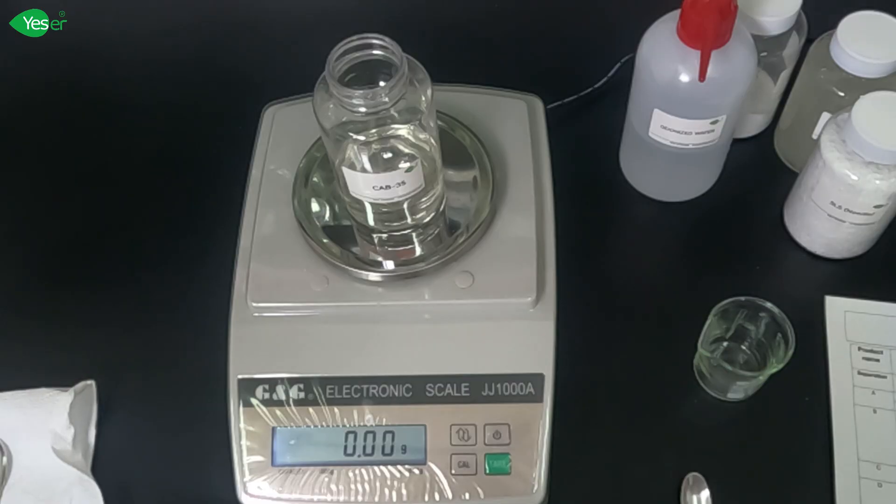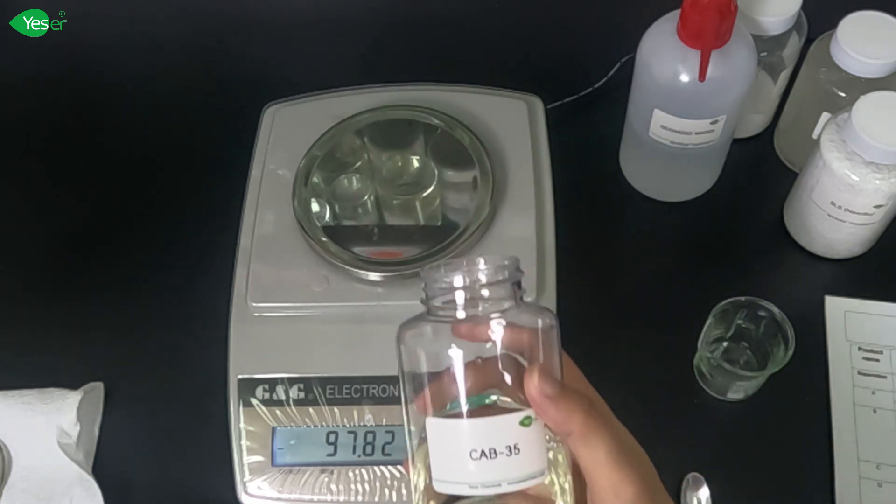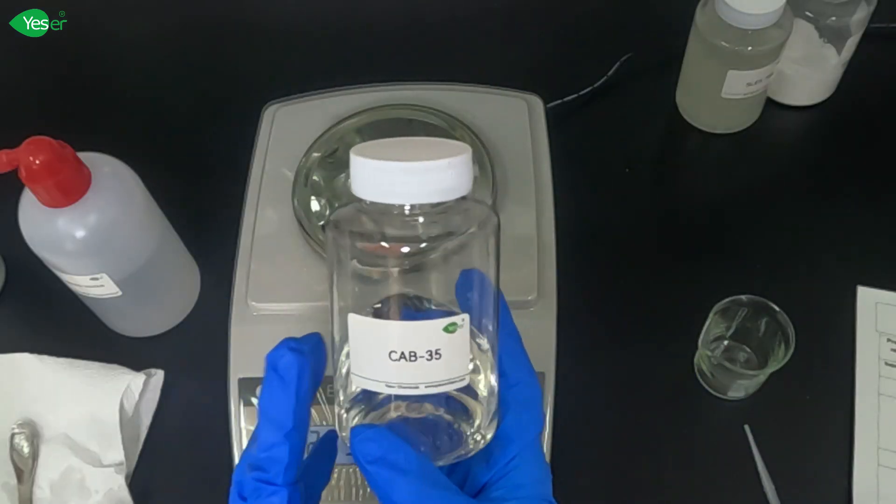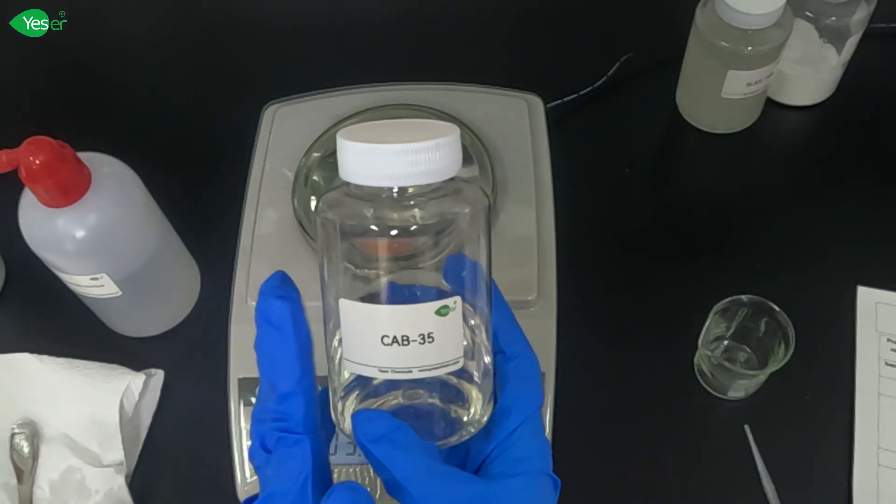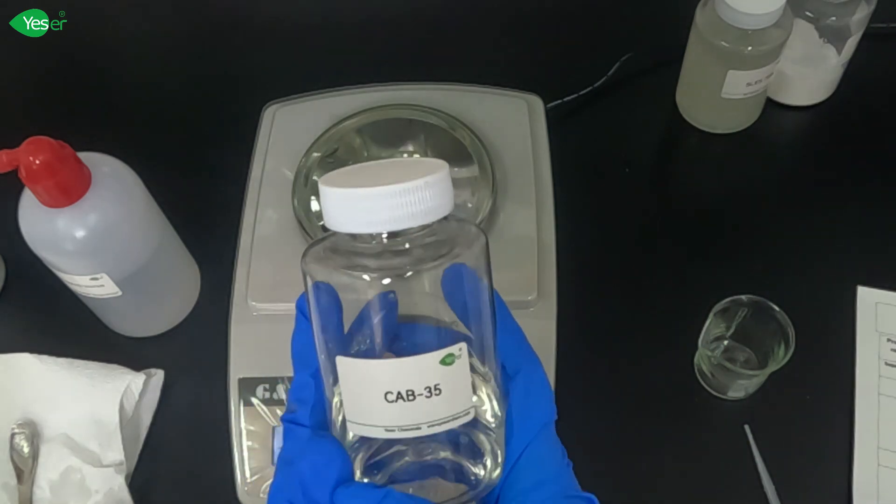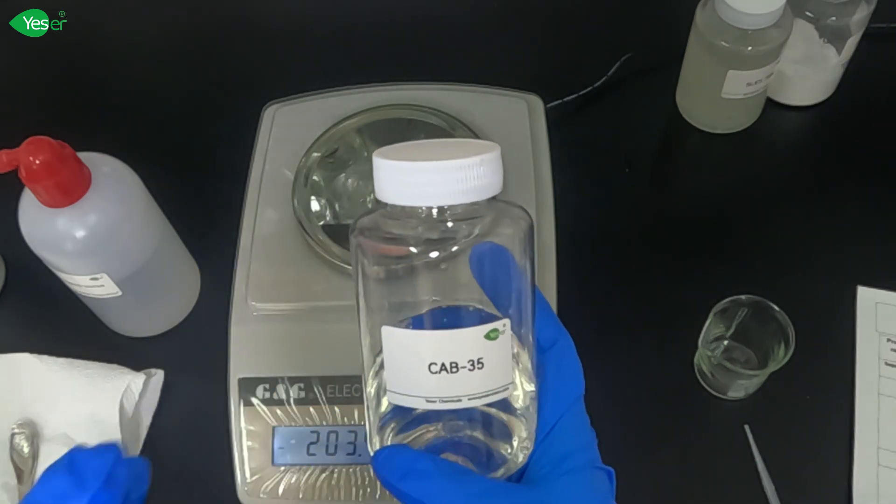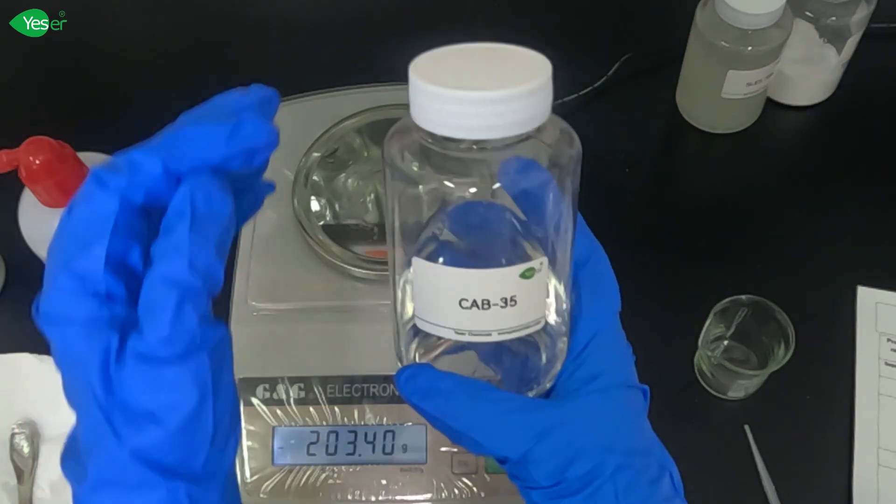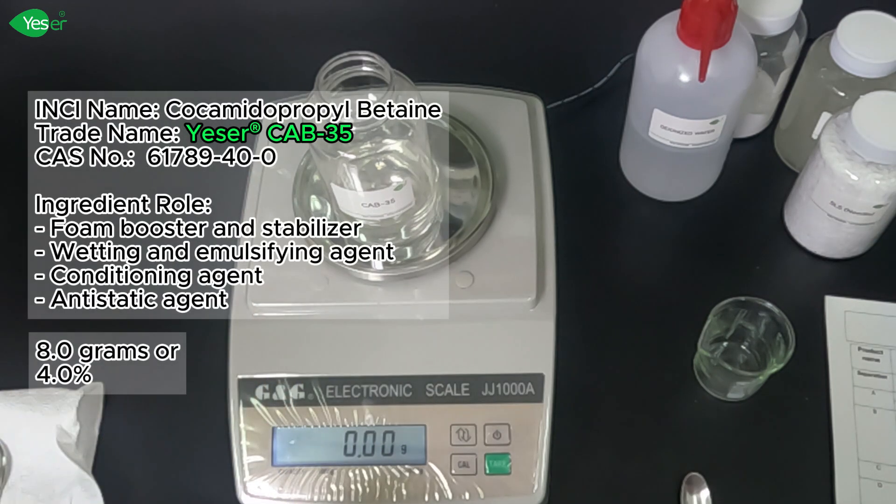After our SLS needle has been completely dissolved, we will now add our CAB 35%. This is an amphoteric surfactant that works to stabilize the foam and helps to condition the skin, making the body wash less irritating and more hydrating. We'll weigh about 8 grams of this, 4% for the formula.